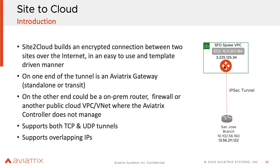We support both TCP and UDP. And if you have a use case where your IP addressing scheme is overlapping — for example, if you have a partner in the San Jose branch using the same IP address scheme as a second partner in Frankfurt — you can easily use our technology to solve that overlapping IP problem.